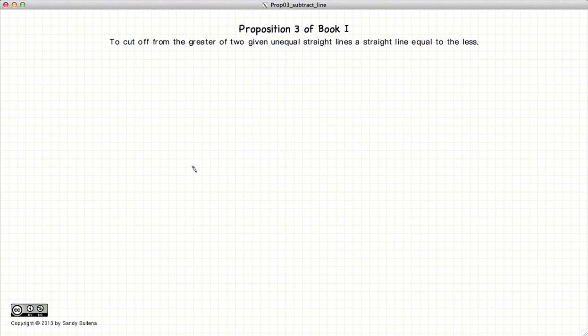So, how do we go about doing that? Let's start with a line AB and a longer line segment CD.